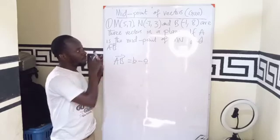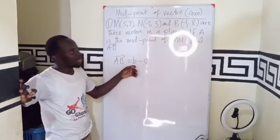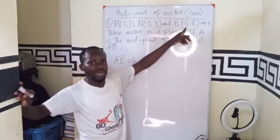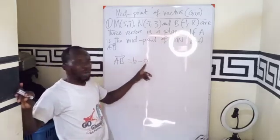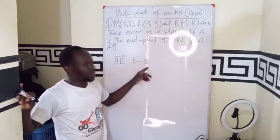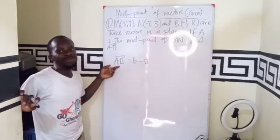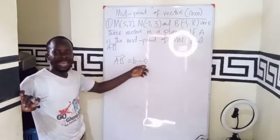So we look back to the question and see whether we have the position vector B. We have the point B which we can convert to become the position vector. Now we don't have the position vector of A. So it means we cannot just solve the position vector AB. We need to know what the vector A is.